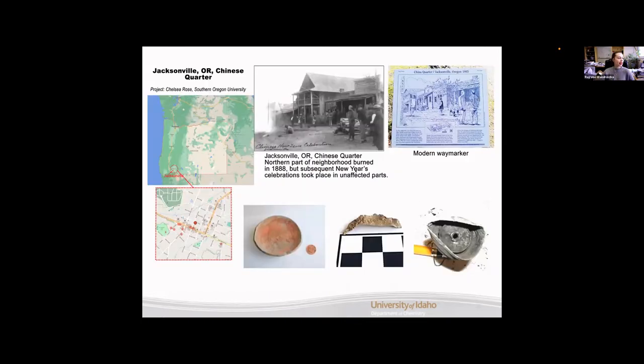Moving on to our next site we have the Jacksonville Oregon Chinese Corridor. This project was headed up by Chelsea Rose. Here on this map of Oregon you can see in the southwest corner is our site. Again we have a historical picture. There is a fire happening in this one but this one was thankfully not due to arson and was simply an accident. Here is a modern way marker just describing the area and different things that were happening in the Jacksonville Oregon site in 1865.